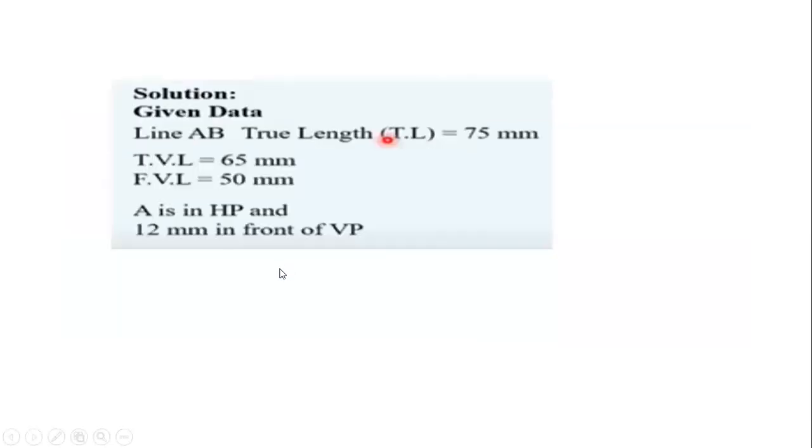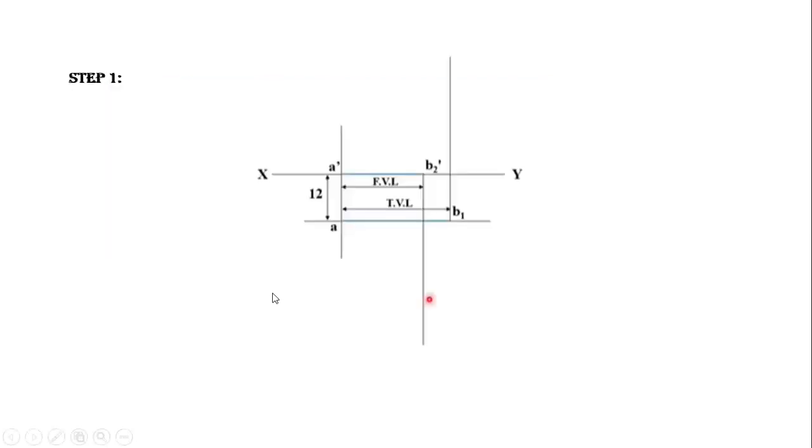Now let us extract the data from the given problem statement. Line AB whose true length is 75 mm, the top view length is 65 mm, front view length is 50 mm. One end A lies on HP, the other end is 12 mm in front of the vertical plane. Now we will see the step by step procedural manual for solving the problem.